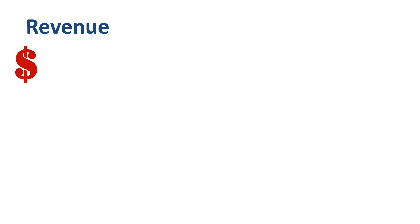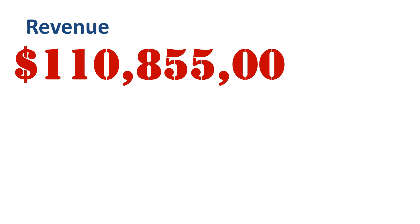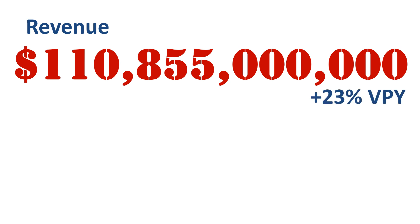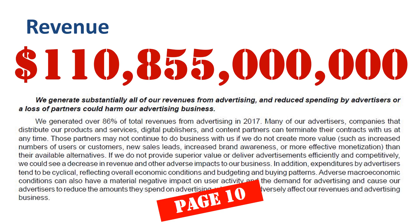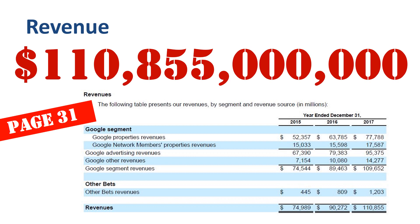First up is revenue. Let's have that number of $110.9 billion sink in — that's 23% higher than the year before. On page 56 of the annual report, Alphabet Inc discusses the nature of operations in Note 1: 'We generate revenues primarily by delivering relevant, cost-effective online advertising.' The risk factors on page 10 specify that 86% of total revenues were generated from advertising in 2017. Page 31 has the revenue by segment. Of the $110.9 billion, 99% is generated by the Google segment and 1% by other bets. Other bets are early-stage businesses such as Nest, Verily, and Waymo, whose revenues are not substantial yet but could become so in the medium to long term.